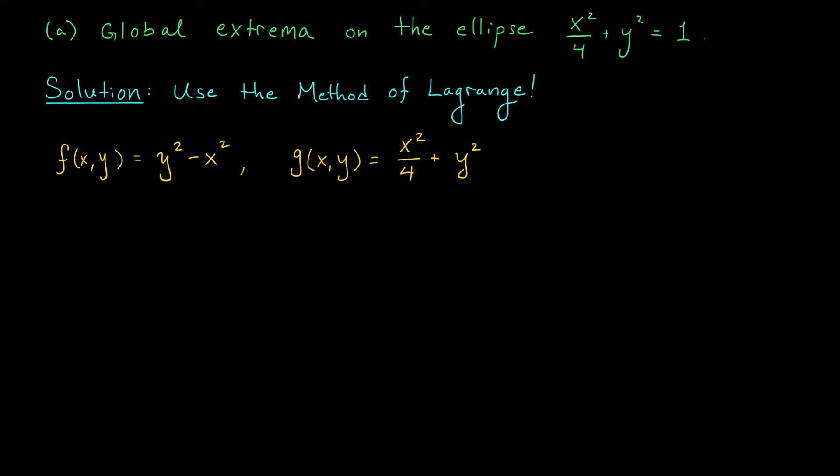The function that we're trying to optimize is this guy, f of xy equals y squared minus x squared. And our constraint can be written as g of xy equals 1, where here g of xy is this expression here. So now that we've identified our functions f and g, how do we actually carry out the method of Lagrange?